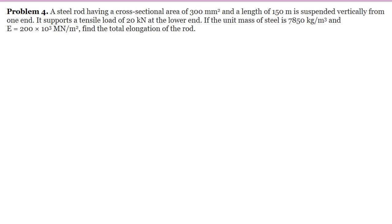Problem number four. A steel rod having a cross-sectional area of 300 mm² and a length of 150 meters is suspended vertically from one end. It supports a tensile load of 20 kN at the lower end. If the mass density of steel is 7850 kg/m³ and the modulus of elasticity is 200 × 10³ MPa, find the total elongation of the rod.